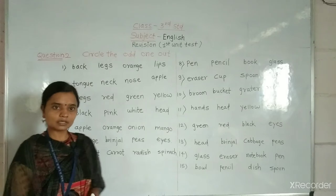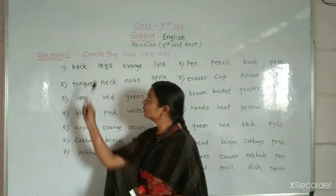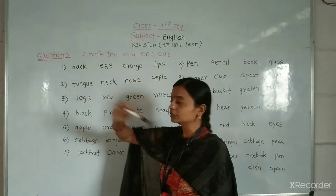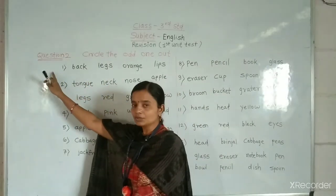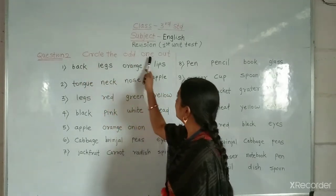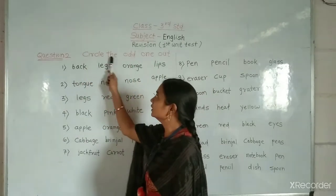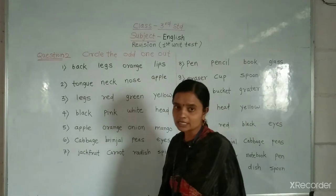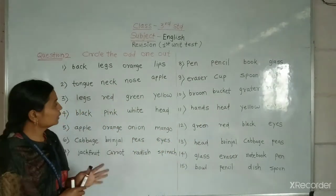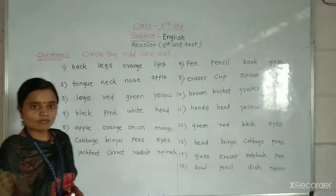First I will read question and you listen carefully and look at the word. Question 2nd. In previous video we had seen question number 1 and in this video we will see question 2nd. Circle the odd word out. Here some words are given and we have to select the odd word.